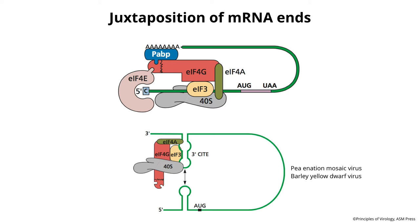In some plant viruses like Pea enation mosaic virus and barley yellow dwarf virus, circularization is achieved differently. Here the initiation complex — 40S, EIF3, EIF4G, EIF4A — actually binds to the 3' end of the mRNA, which makes no sense because the initiation codon is at the 5' end. But what happens is there's a long-range RNA-RNA interaction: two stem loops, one at the 5' end and one at the 3' end, can base pair, which brings the initiation complex to the 5' end where it starts translating. It's a really unusual way of doing business — that's plant viruses for you.